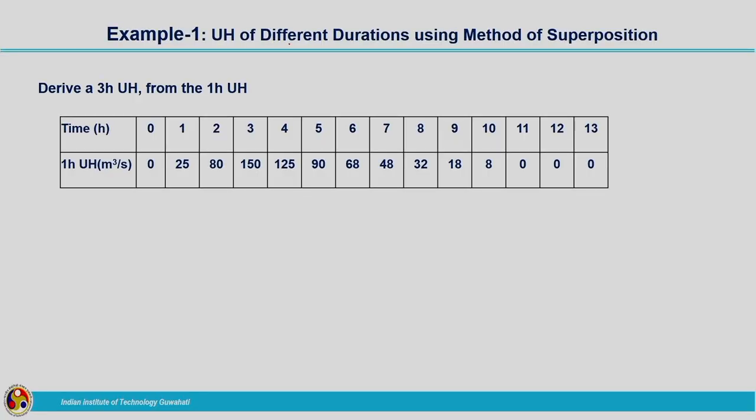The first example is deriving a unit hydrograph of different durations using the method of superposition. We need to derive a 3-hour unit hydrograph from a 1-hour unit hydrograph. The time in hours and 1-hour unit hydrograph ordinates are given. Since 3 hours is an integral multiple of the 1-hour duration, we can make use of the principle of superposition here.